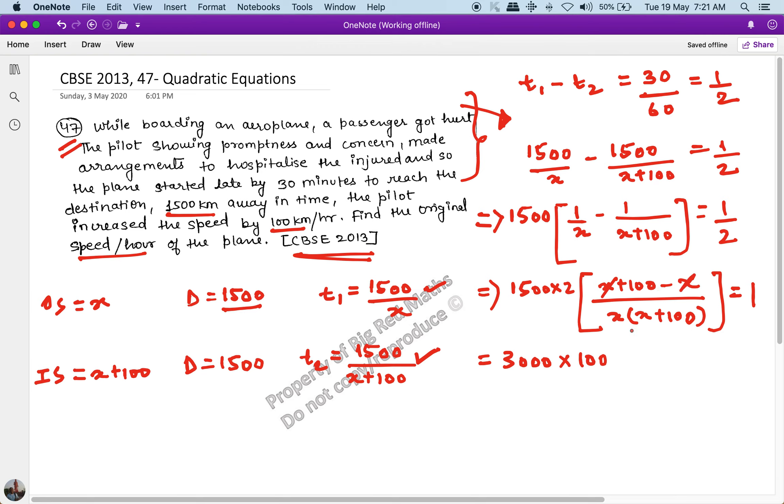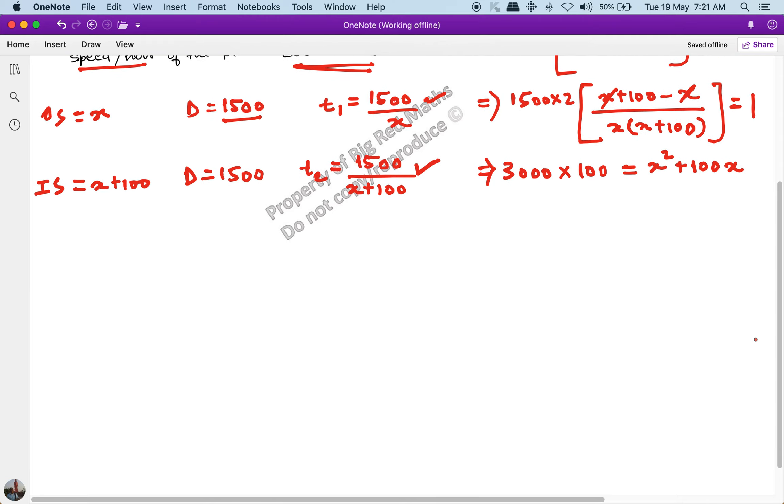Because the x minus x cancels out, and moving the denominator to the RHS, so 3000 into 100, this becomes x squared plus 100x. And now we can see the quadratic equation forming. So if I move all these terms to the RHS, this becomes x squared plus 100x minus 300000 equals 0.